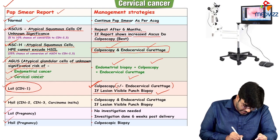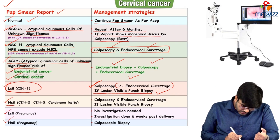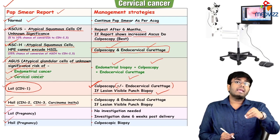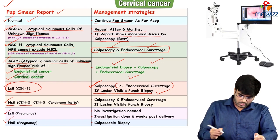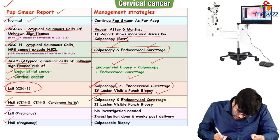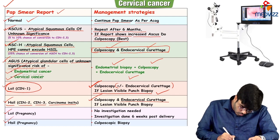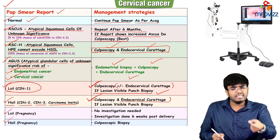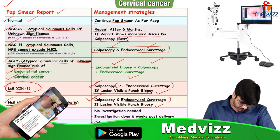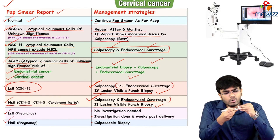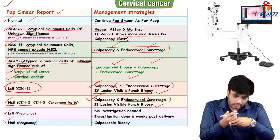Cone biopsy is done to confirm the findings of colposcopy. If there is any discrepancy between Pap smear result and colposcopy — pap showing abnormality but colposcopy normal — you need a more confirmatory test: cone biopsy. Or if you have unsatisfactory colposcopy where you cannot see the transformation zone or localize dysplastic cells, go with cone biopsy.